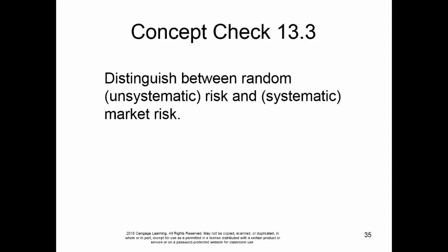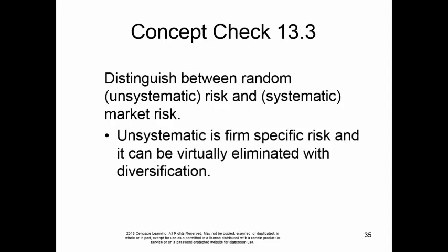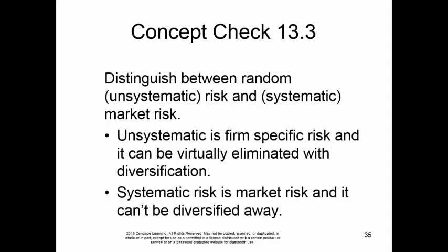Concept check 13.3: Distinguish between random or unsystematic risk and systematic or market risk. Unsystematic risk is firm-specific risk, and it can be virtually eliminated with diversification. Systematic risk is market risk, and it cannot be diversified away.